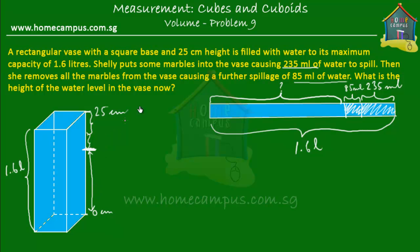There are a few things given to us. One is that the height of the vase is 25 cm, and the vase has a square base. You only have to keep in mind that the base is square, which means the length is equal to the breadth or the width, and the height we correctly mark as 25 cm. So let's do our calculations to find out the height of the water level in the vase now.